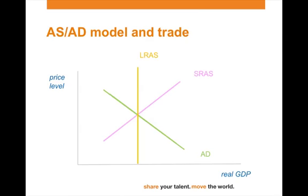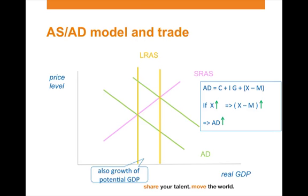Let's go back to our aggregate supply and aggregate demand model. As we have seen in AD, there is X minus M — exports minus imports. So if exports increase, X minus M increases, and if net exports increase, aggregate demand will increase. In our diagram, this leads to a shift of the aggregate demand curve to the right.